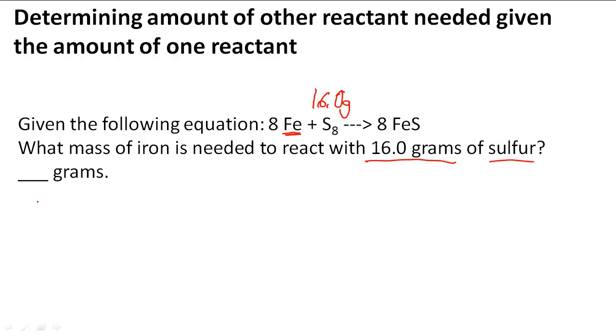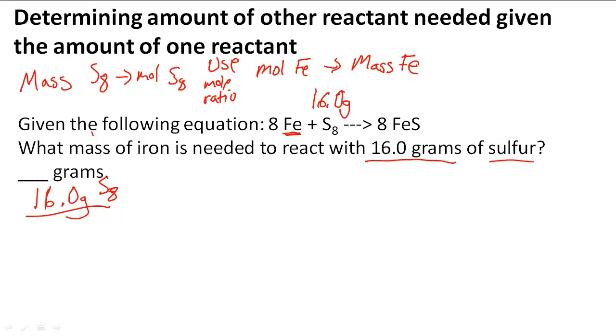What we're going to do is take 16 grams of sulfur divided by its molar mass to get the number of moles. We're going to go from the mass of S8 to the moles of S8, use the mole ratio to get the moles of Fe, then use the moles of Fe to get the mass of Fe in grams.